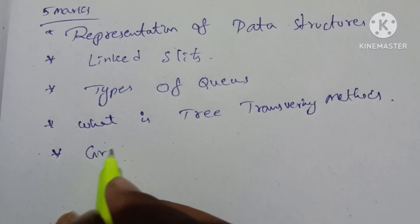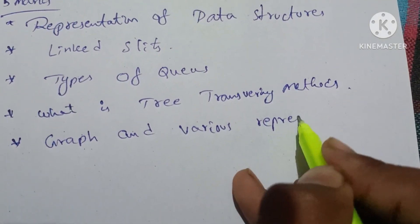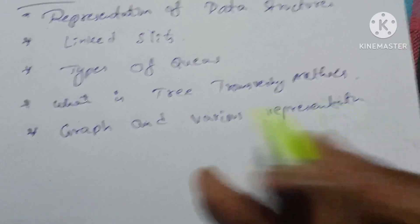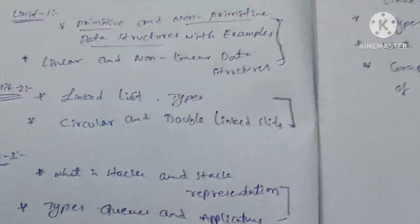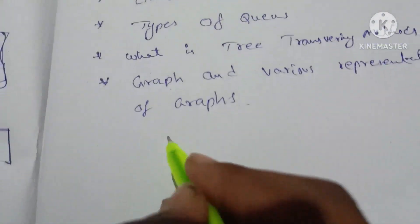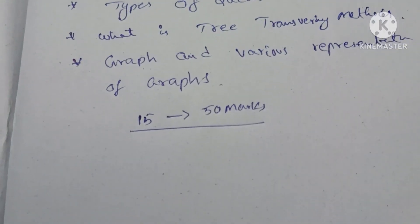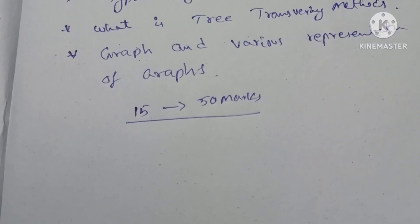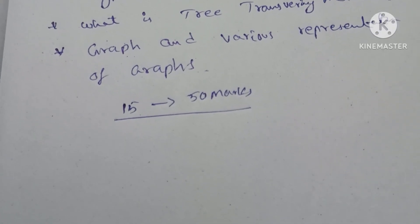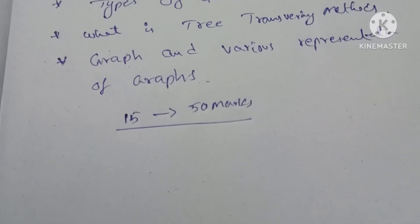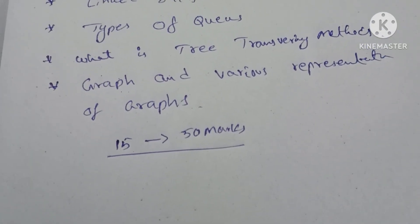Here is the graph and various representations of graphs. These 15 questions make up 50 marks. This is for first-time maximum degree paper correction — you will be able to answer your first paper and this subject.